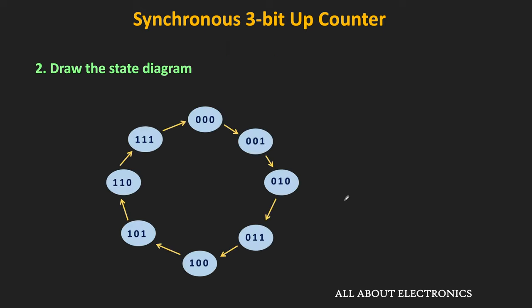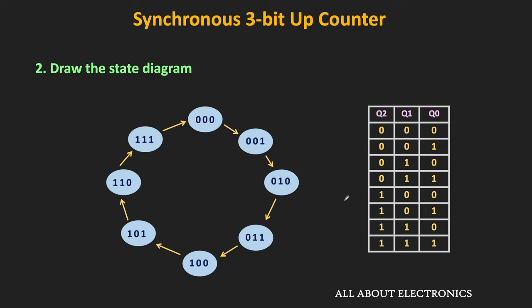The next step is to draw the state diagram, which shows the sequence in which the output state of the counter will change — specifically, if the counter is in a specific state, what will be the next state. Since it is a 3-bit up counter, the output will change from 000 to 111. The outputs of the 3 flip-flops are Q2, Q1, and Q0, where Q2 is the MSB and Q0 is the LSB. This 3-bit up counter will have 8 different states.